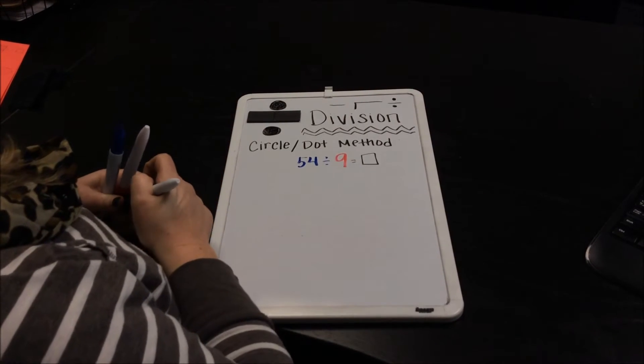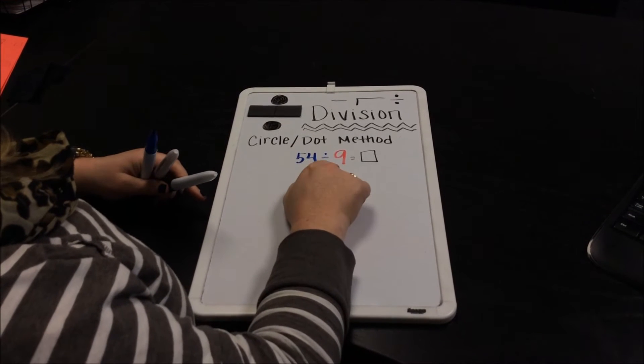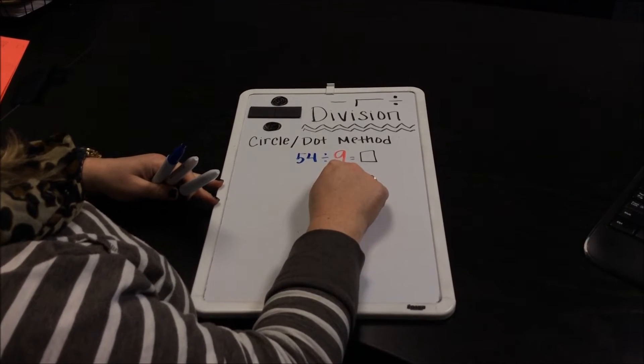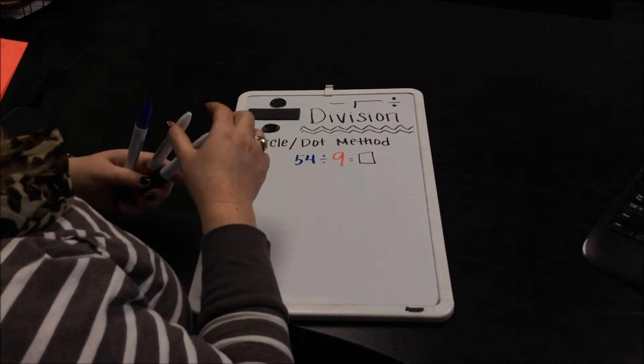So with the circle dot method, when you take your division sentence you always look at your divisor and that is 9.